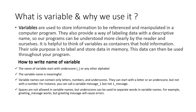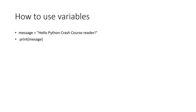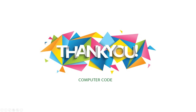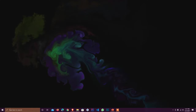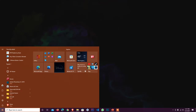Here are some rules for writing variable names. For example, 'message' is a variable, and we assign the value with equals: message = 'Hello Python Crash Course Reader'. Then we use print to display it. Let's implement this in Jupyter.